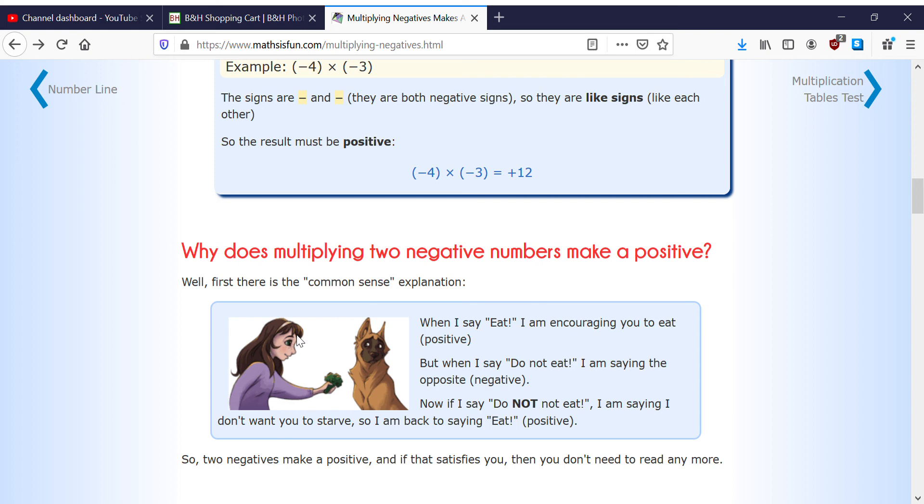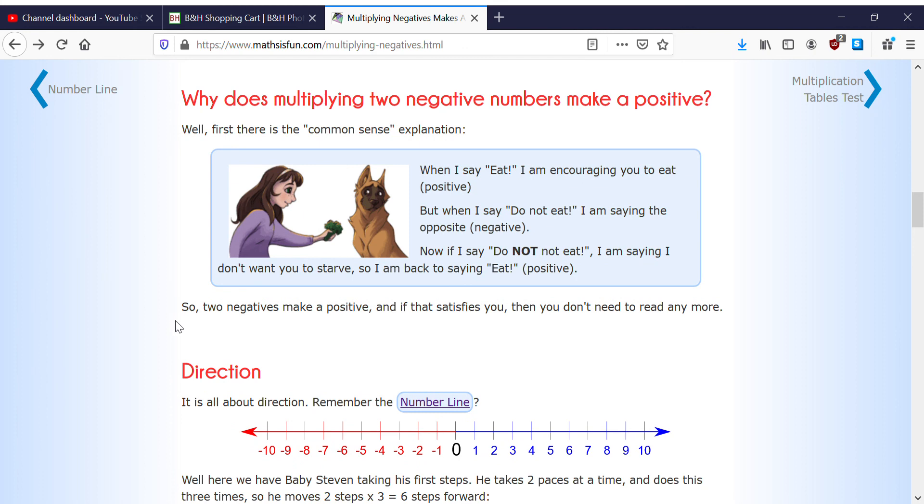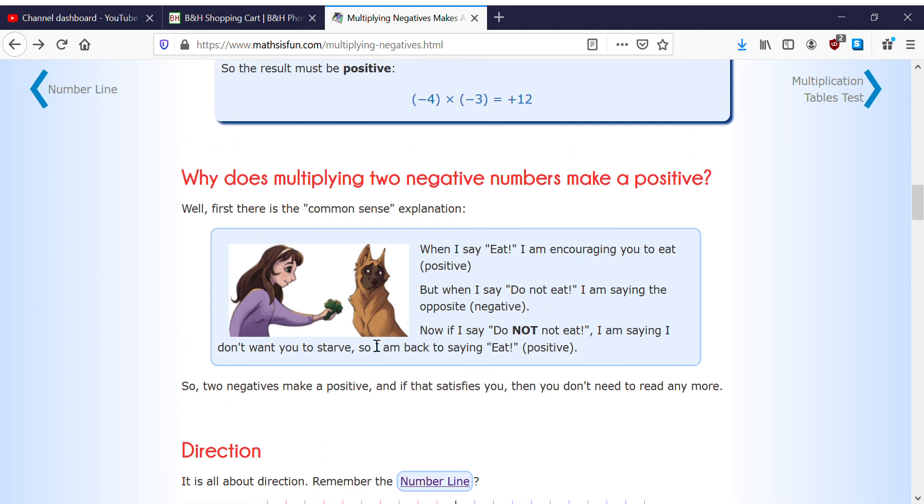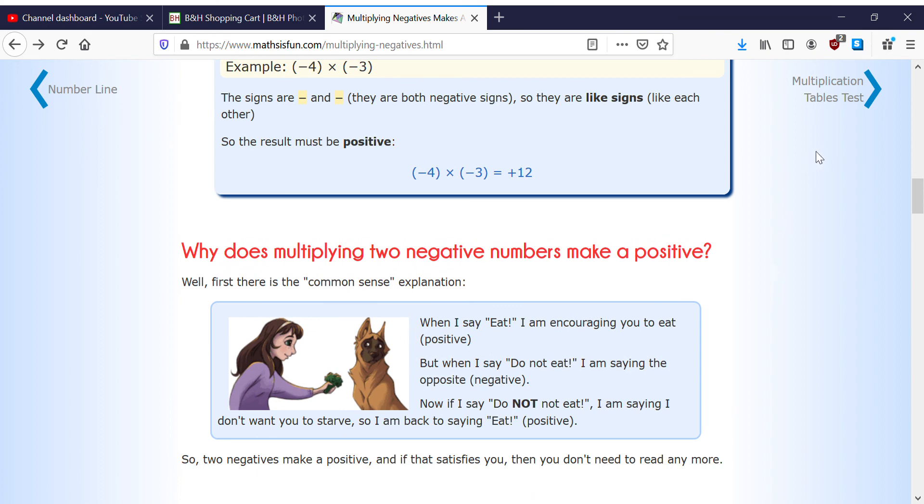Because do not not eat - if you say do not eat it would be like don't eat it, but you say do not not eat it. So if you say do not not eat it then you're saying eat it. So two negatives make a positive. And if that satisfies you then you don't need to read anymore. So that's it for today, I'll see you in the next video. Bye!